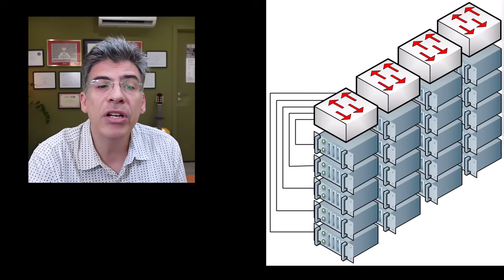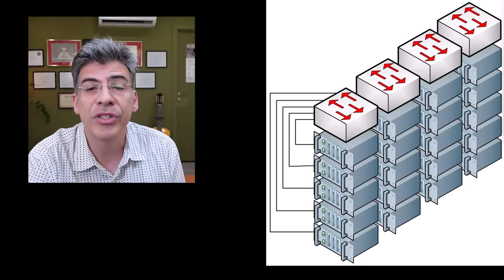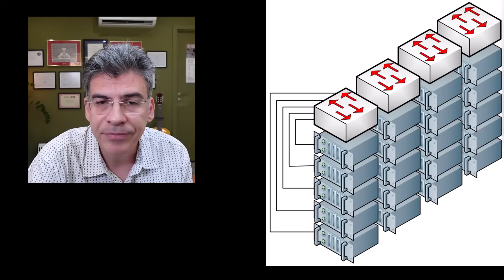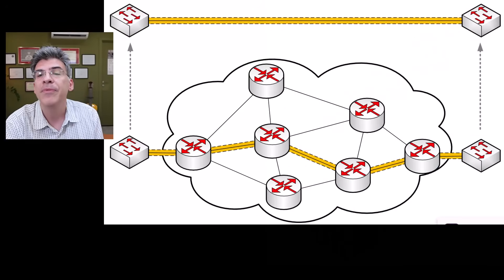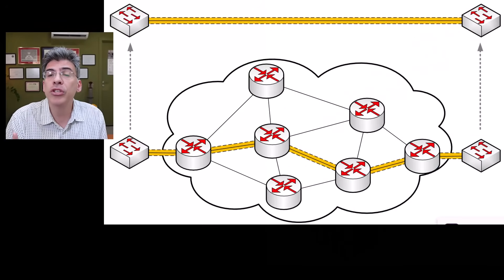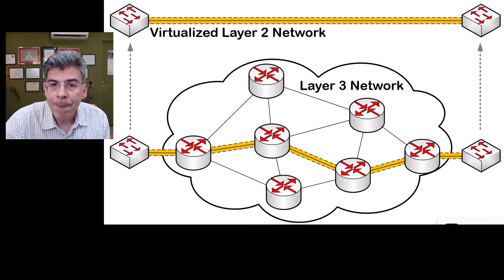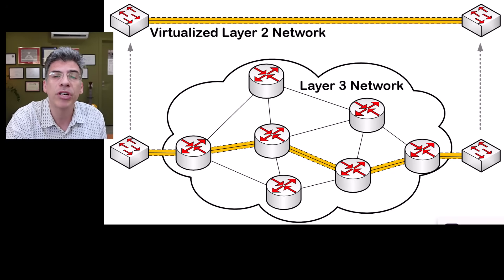So these are the major issues that VXLAN comes to resolve. But what is VXLAN? VXLAN is a network virtualization technology used to extend Layer 2 networks over Layer 3 networks. This virtualized Layer 2 network infrastructure overcomes all of these scalability issues involved with more traditional Layer 2 infrastructure.